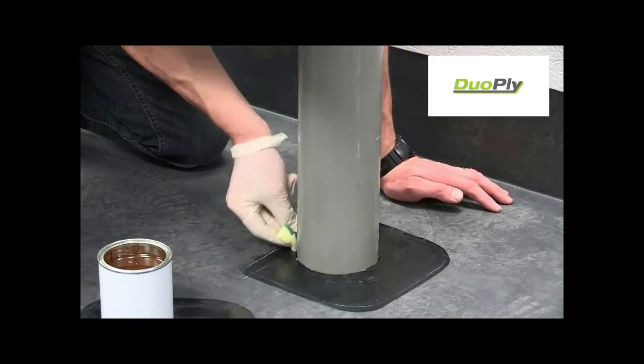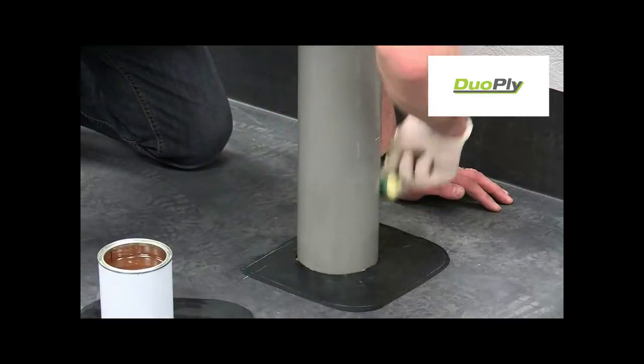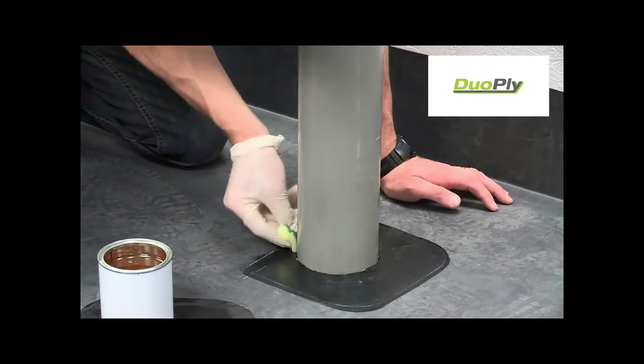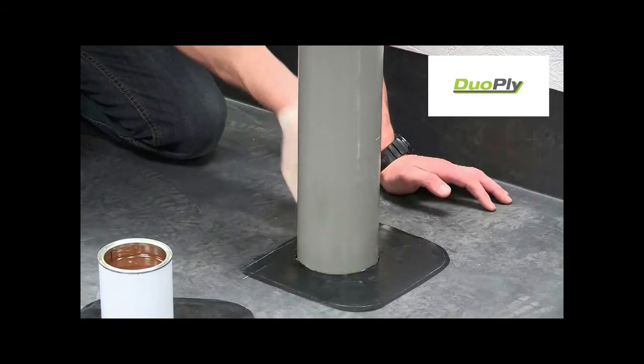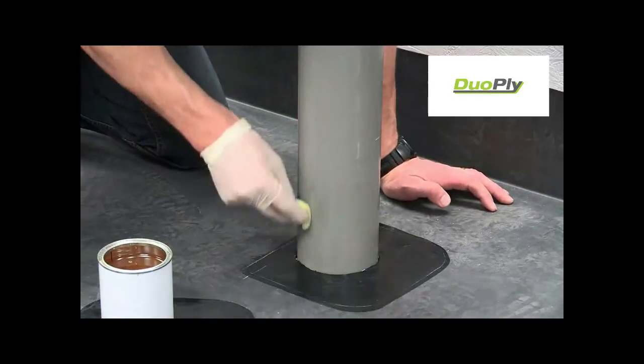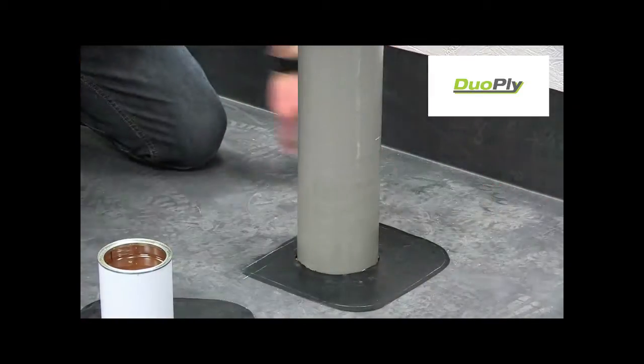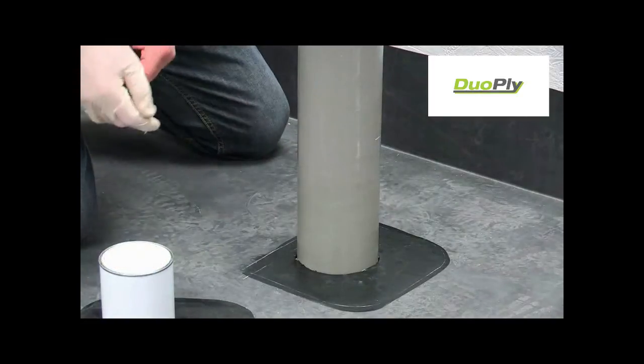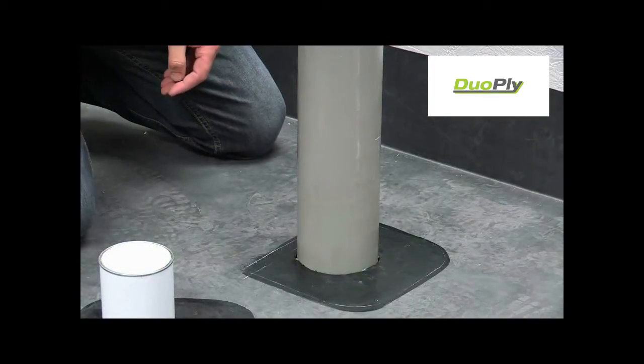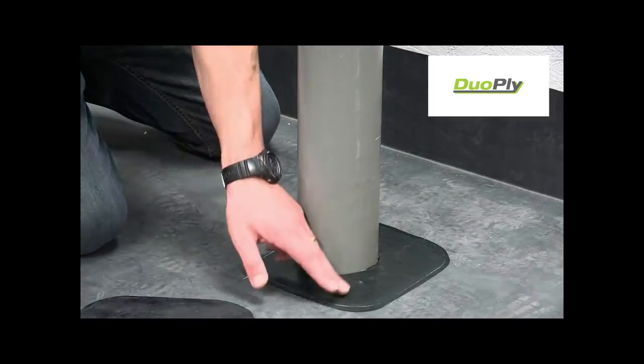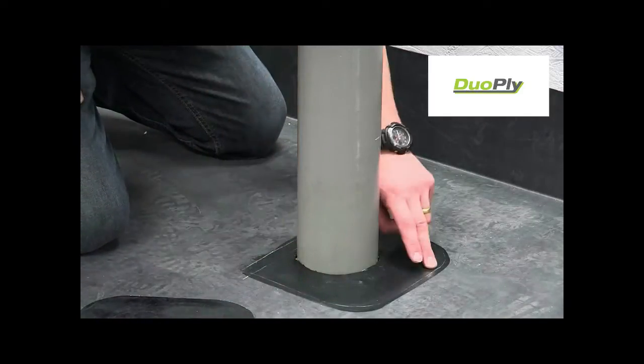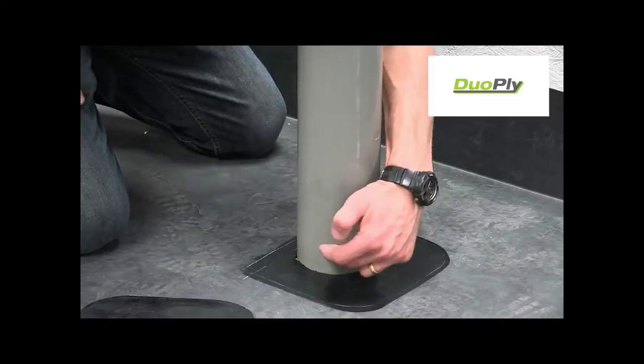Scrub primer into the surface ensuring it is applied to the entire target area. Remove any pools of primer to create a thin, even coat. Ensure hands are clean and dry before moving on to the next stage. Touch test the primer to ensure it is thoroughly dry and flashed off. It shouldn't leave a fingerprint or transfer to your hand.